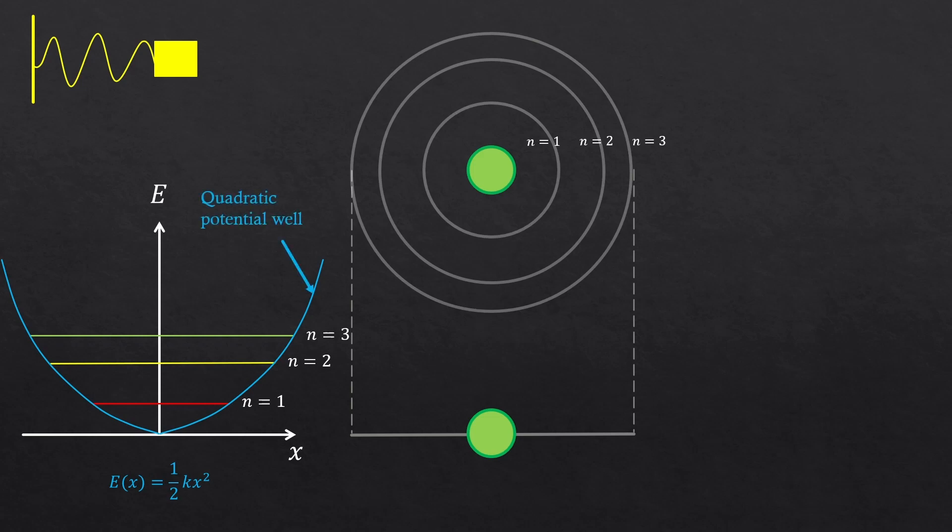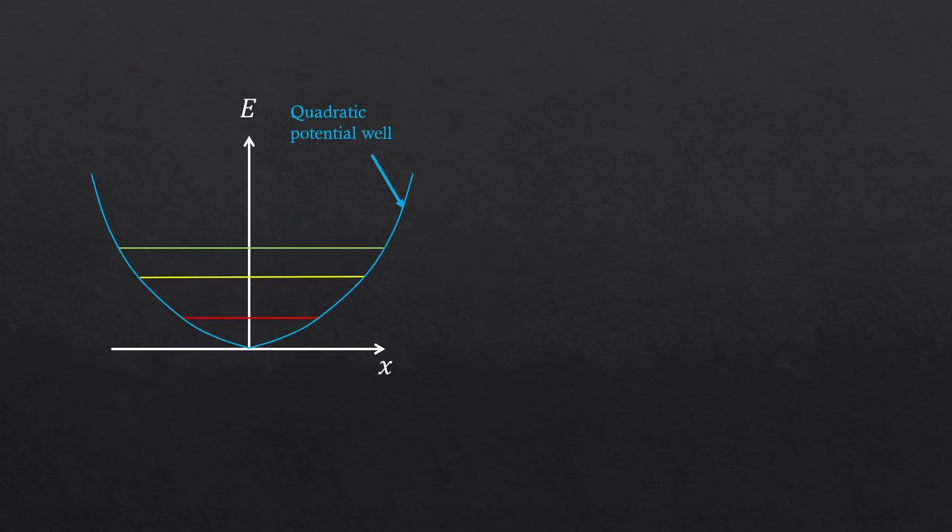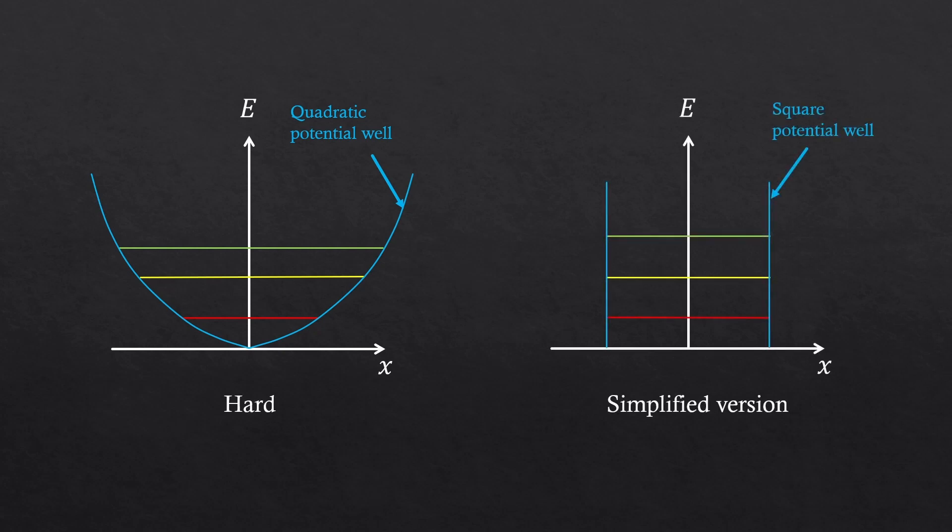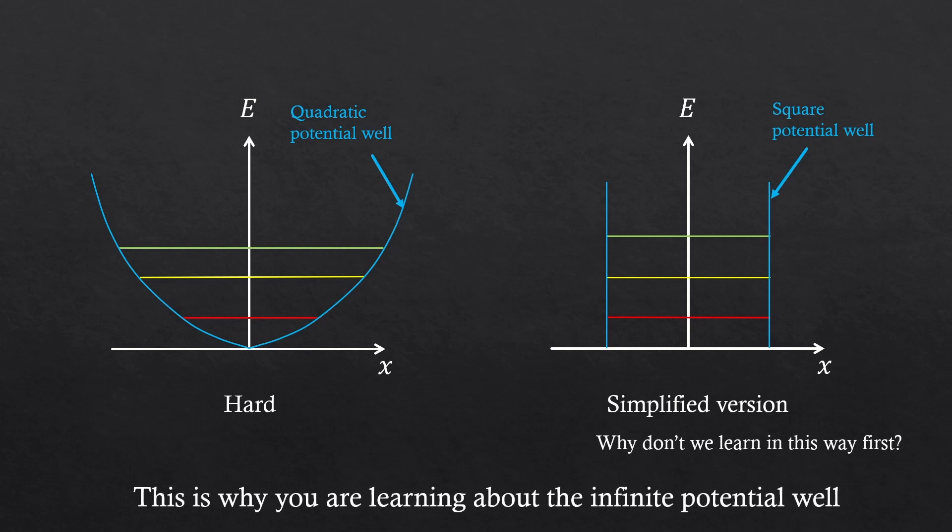This is called quadratic potential well. As this quadratic potential well is a little bit complicated case, we could first consider a simplified version, which is the square potential well. This is why you're learning about this infinite potential well in the beginning.